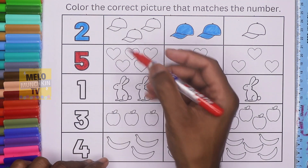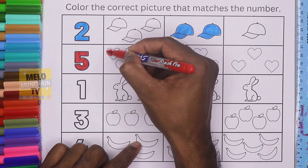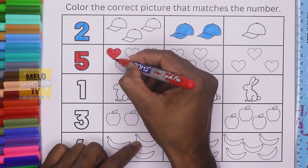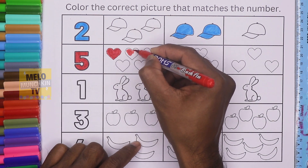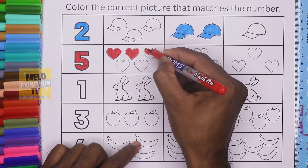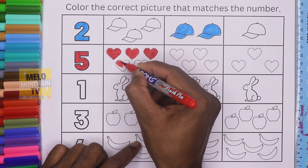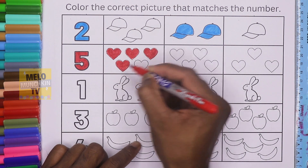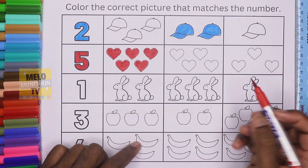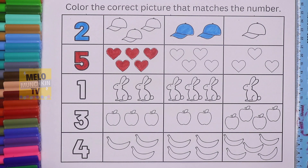Five! And this one — five hearts. So let's color quickly: one, two, three, four, and five — five hearts! Okay, second one is also completed. Let's go for the third one.